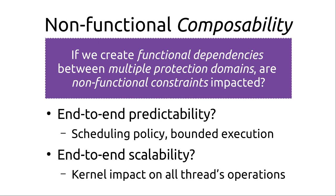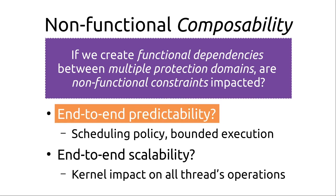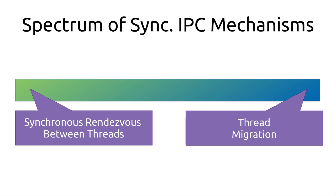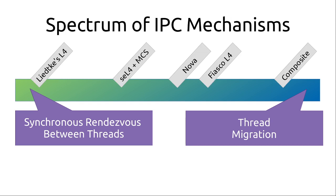I'm also going to talk briefly about end-to-end scalability, which boils down to whether the kernel has an impact on threads' operations. I'm going to paint this with a historical brush, placing systems on a spectrum between synchronous rendezvous between threads and thread migration. I'll look at historical systems all the way from Liedtke's L4 — the original L4 variant that pioneered fast IPC for microkernels — up to Composite, which focuses entirely on thread migration. I'll also look at Fiasco, Nova (an L4 variant focusing on hypervisors), and seL4 with the MCS extension somewhere in between.